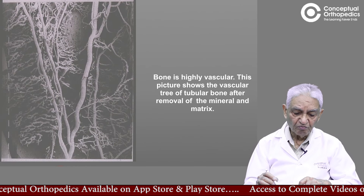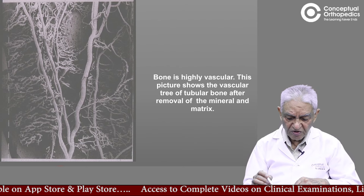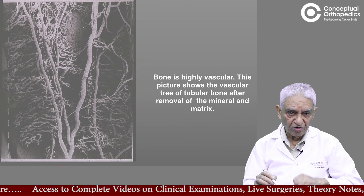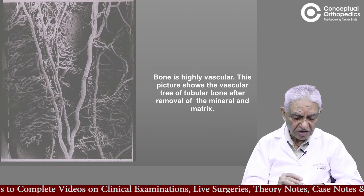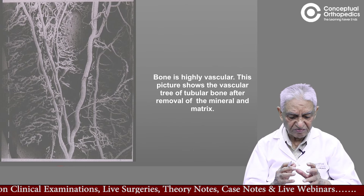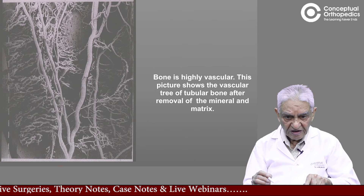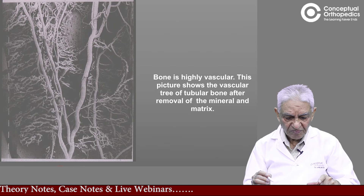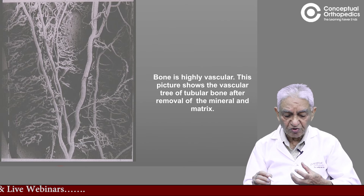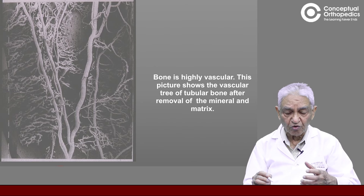Keep in mind bone is a very vascular structure — it is not a dead piece of wood. If we remove the mineral and matrix from a bone, what remains is a very vascular tree, full of vessels and branches. Almost all the bone is laid down around the vessels. Here we are showing a specimen from which the matrix has been removed, demonstrating how vascular bone is. That is why a fracture of the bone causes bleeding — the so-called fracture hematoma.